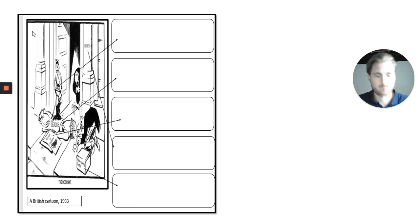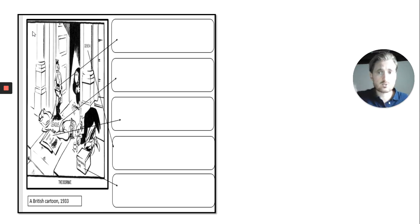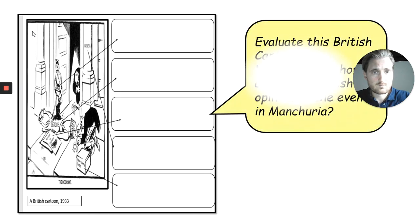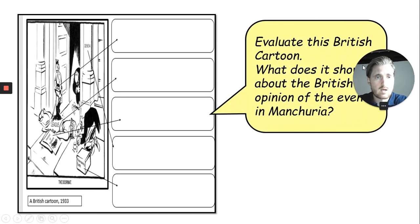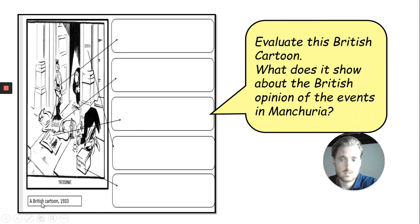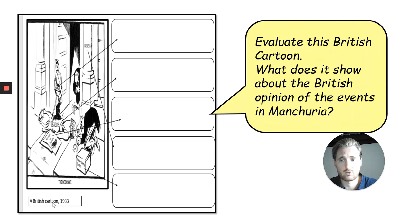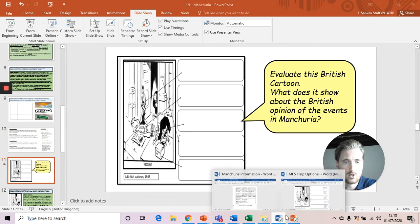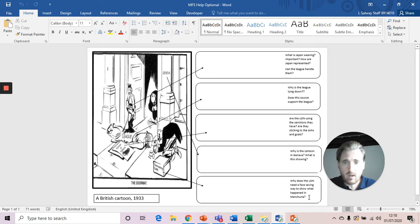So finally, you don't always get a writing account question or an essay question — you sometimes have source questions. This is a source that has come up previously before. I want you to look at this cartoon and evaluate it: what does it show about the British opinions of the events in Manchuria? It's really important that you always look at the provenance of the cartoon. At the bottom it says 'a British cartoon in 1933.' So we know from the date it's to do with the Manchurian crisis, and we know it's a British cartoon. You now need to open this document that your teachers have sent you.